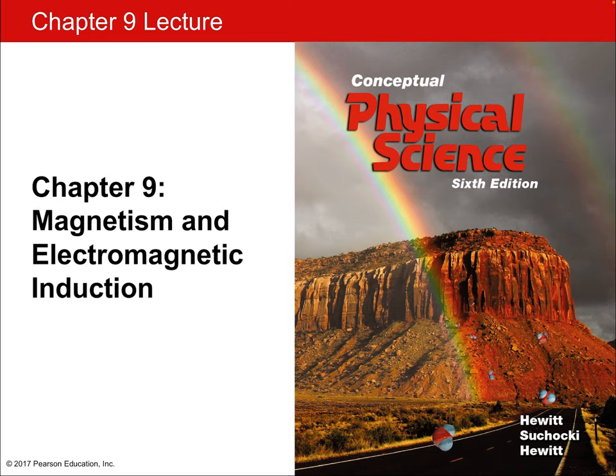Hello and welcome to the lecture for Chapter 9 of Conceptual Physical Science. This is the second of two chapters covering electricity and magnetism and electromagnetism. In the last chapter, Chapter 8, we talked about how electricity and the electric force known as the Coulomb force is a lot like gravity. Now, what's so cool about Chapter 9 is we're going to talk about how electricity combines with magnetism, how they're intimately related, which makes electricity honestly more interesting at this level of understanding than gravity.